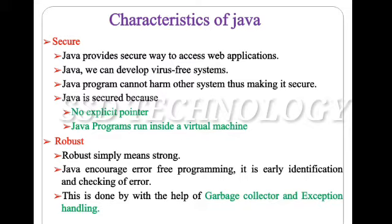What is garbage collector? Java garbage collection is the process by which Java programs perform automatic memory management. Java programs compile to bytecode that can be run on a Java Virtual Machine, i.e. JVM. The garbage collector finds the unused objects and deletes them to free up memory.